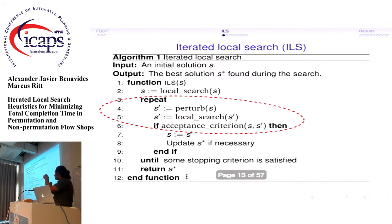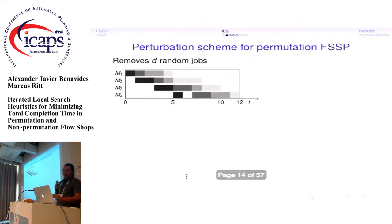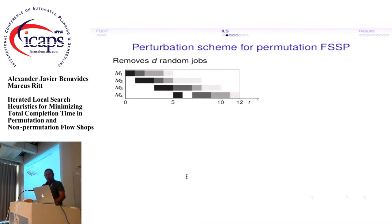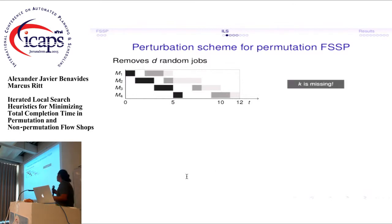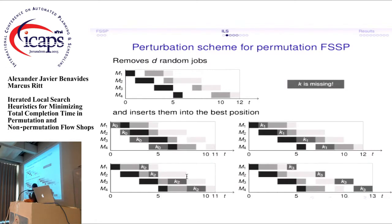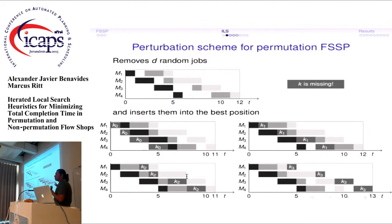Let's explain the three building blocks. The first is the perturbation scheme: we remove a number of jobs and try to reinsert them. In this example we remove one job — it's missing from the schedule — and try to put it back in every possible position. Since this is a permutation schedule, there are only n possible positions for reinsertion.